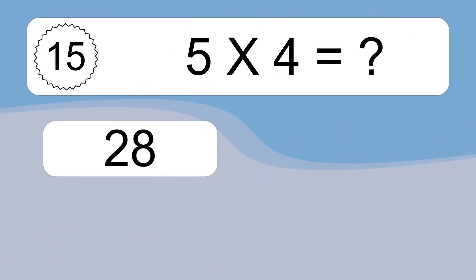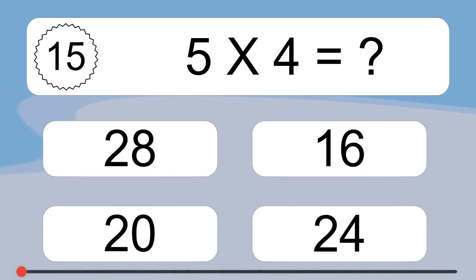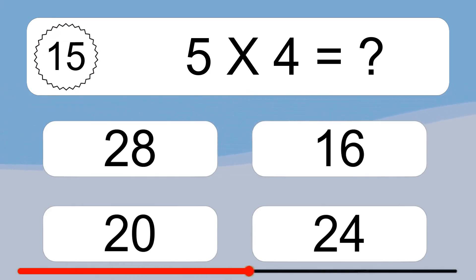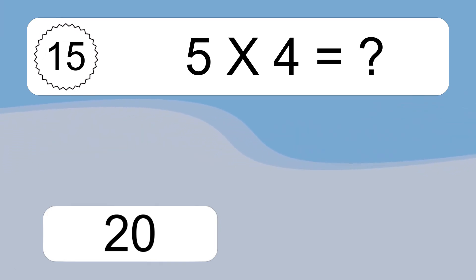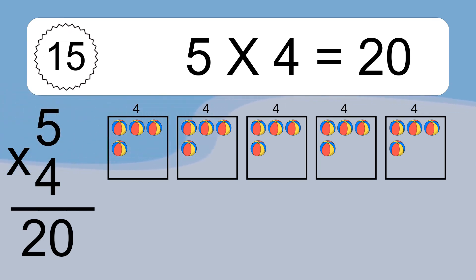Five times four equals what? Five times four equals 20. We have five boxes, and each box has four colorful balls inside. If you count all the balls in all the boxes together, you will have five times four balls. This equals 20 balls.